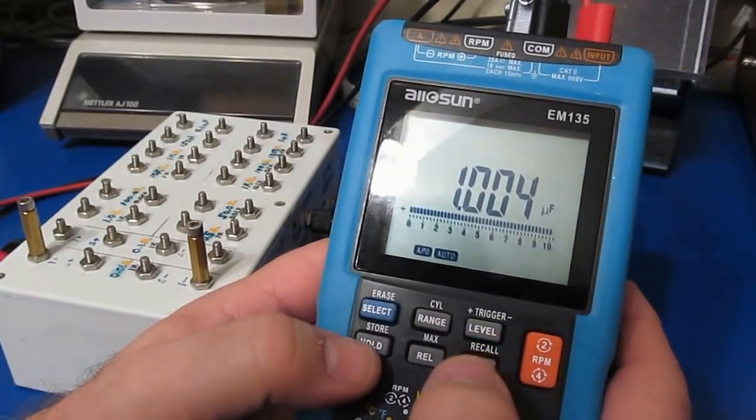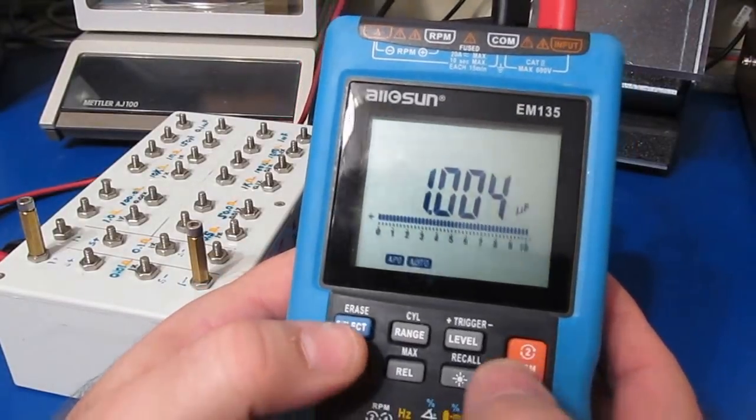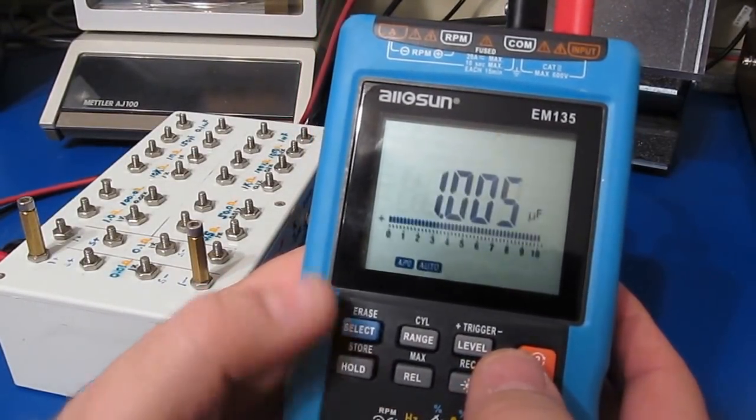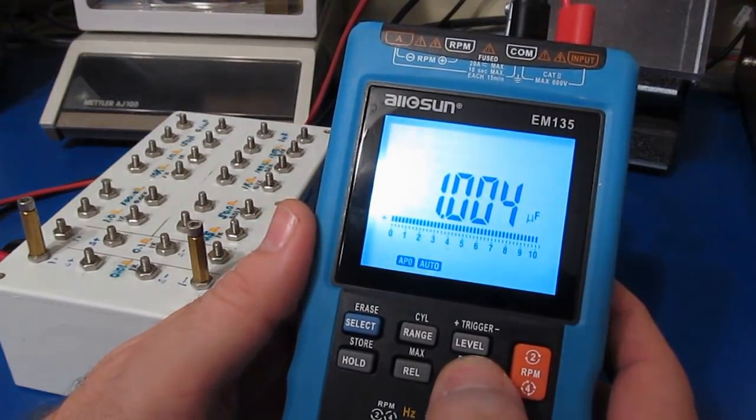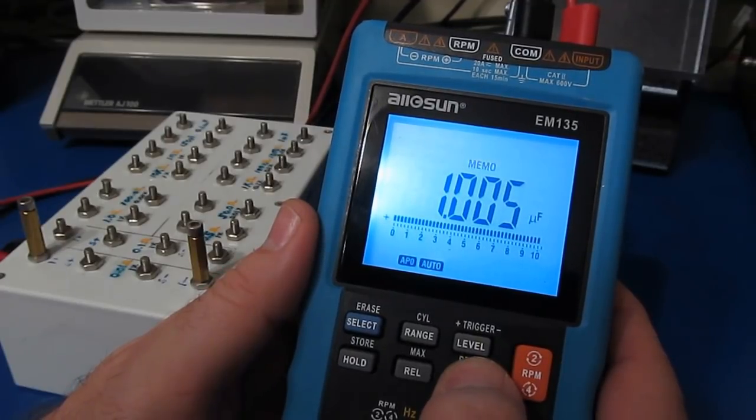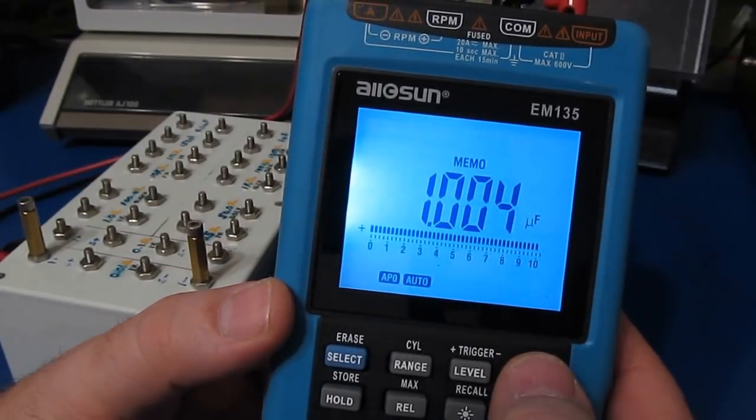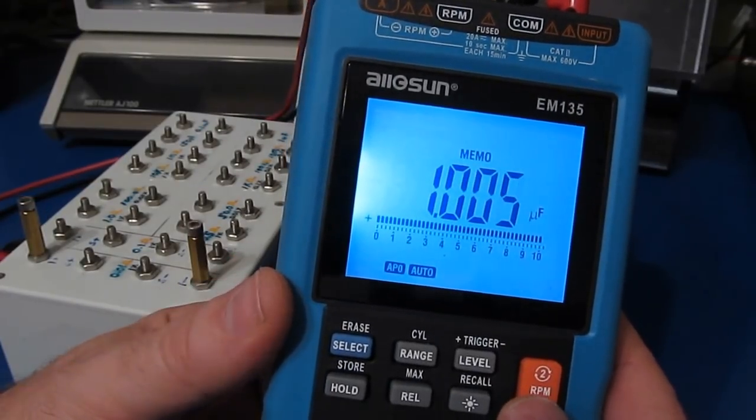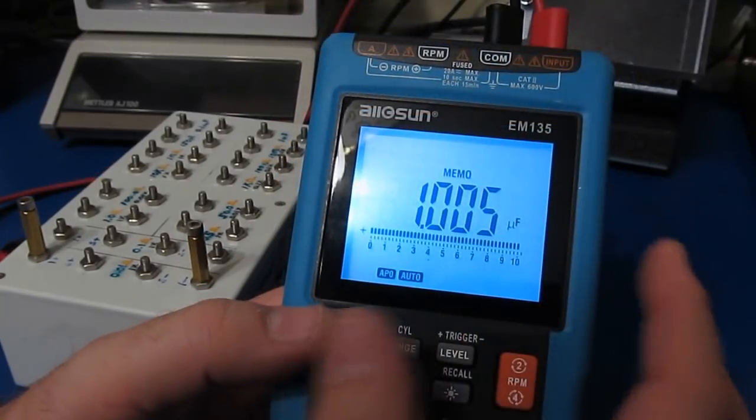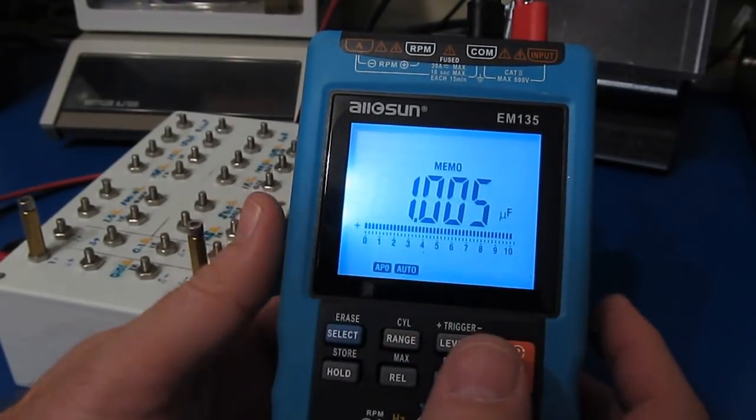The store feature allows saving measurements: selecting store saves to position two, then three. The recall function retrieves these: recall three, two, one. The display shows what mode it was in and the stored value. If taking many measurements and needing quick storage, this is a nice feature.